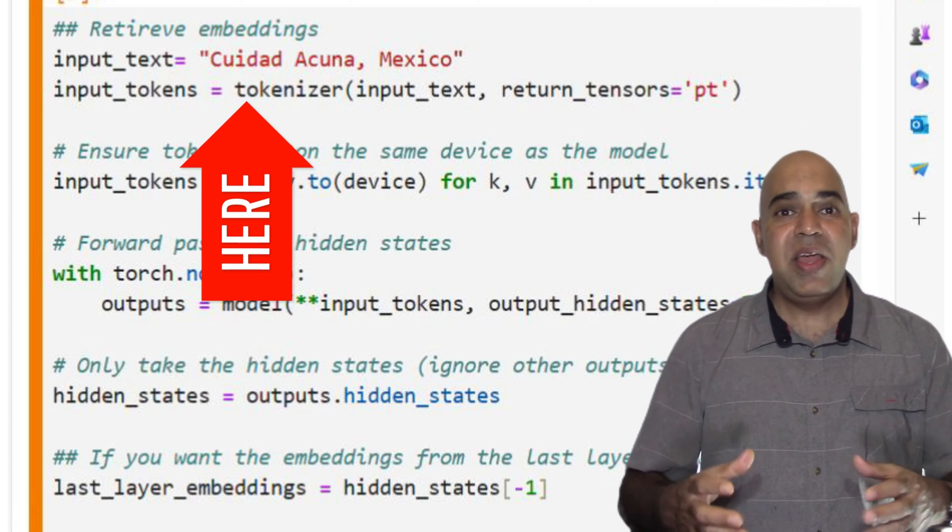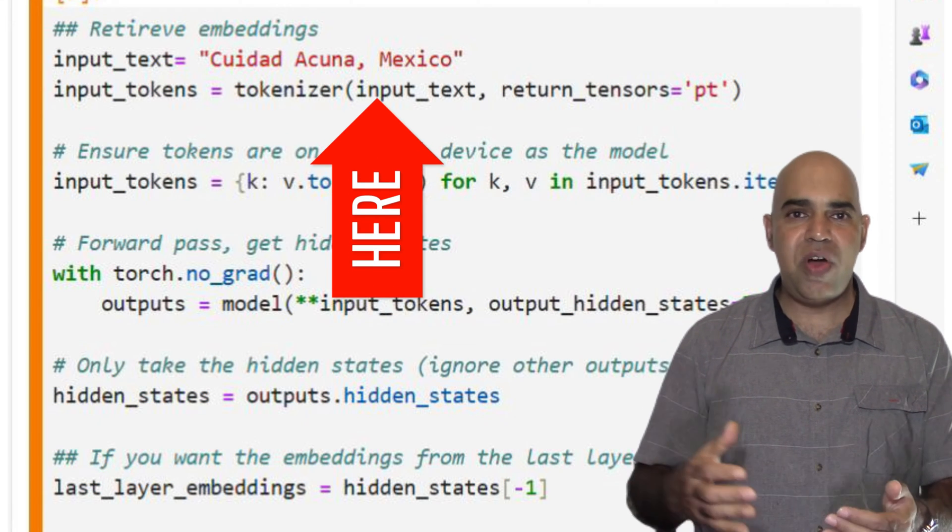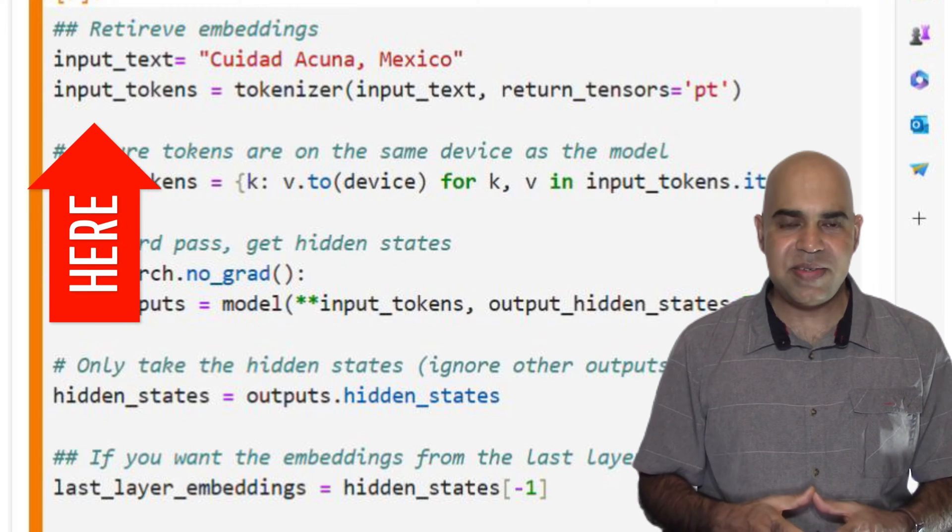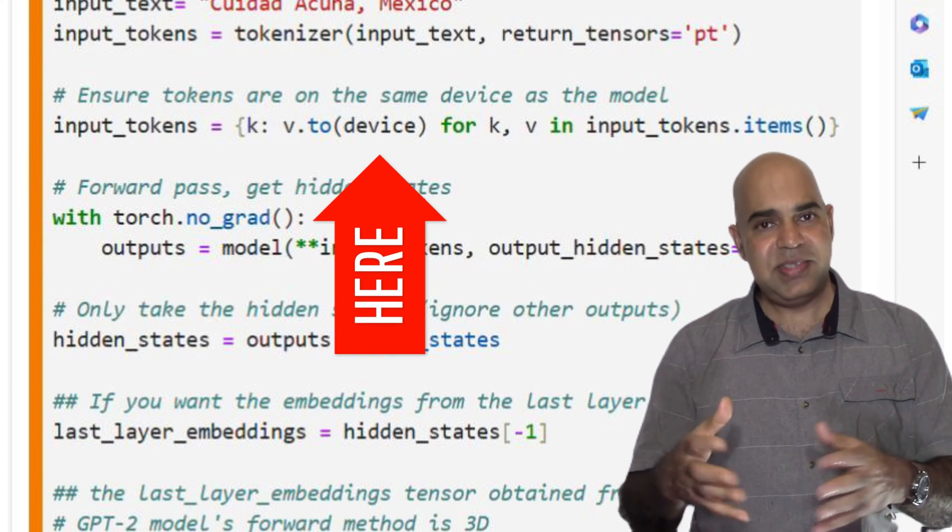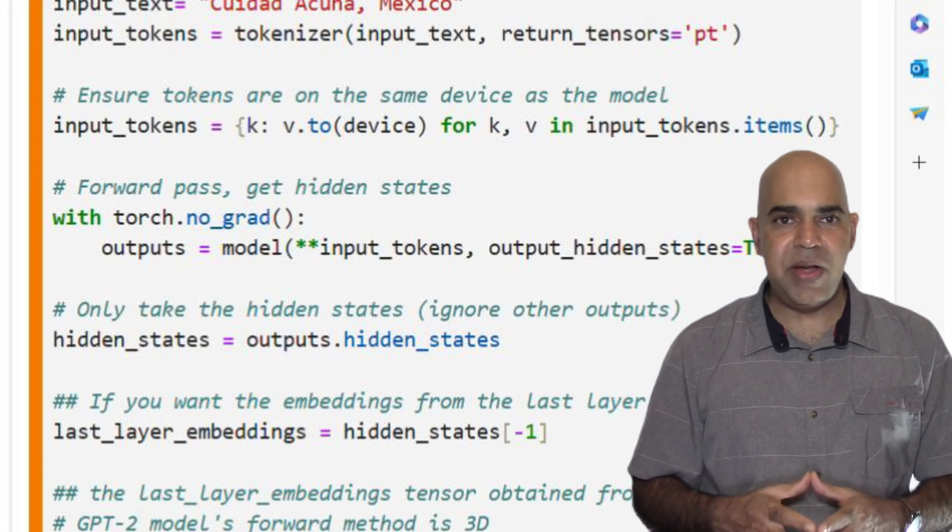We use our tokenizer to convert the text into a format that the model understands. I ensure that the tokens are in the same place, CPU or GPU, to avoid any errors.